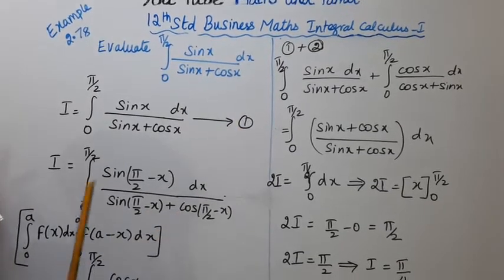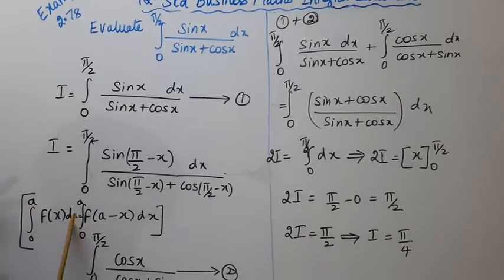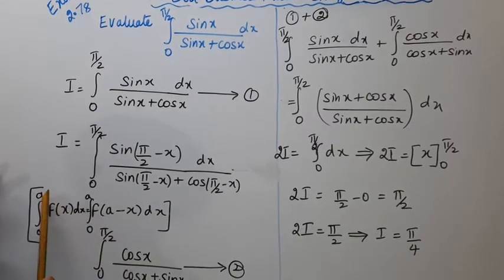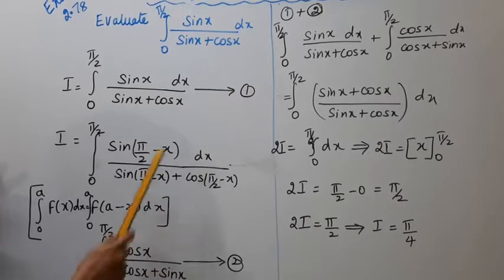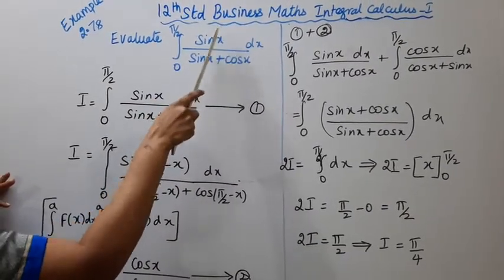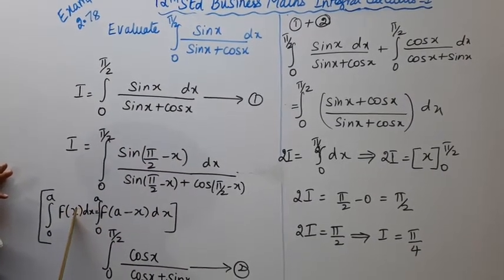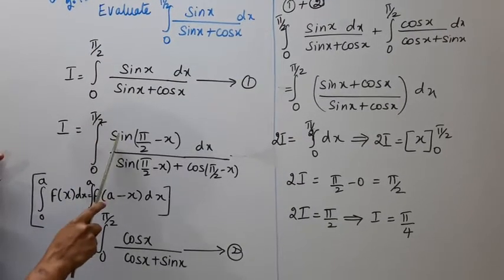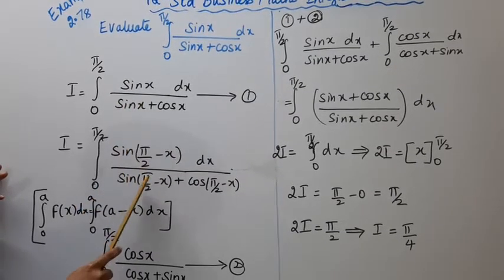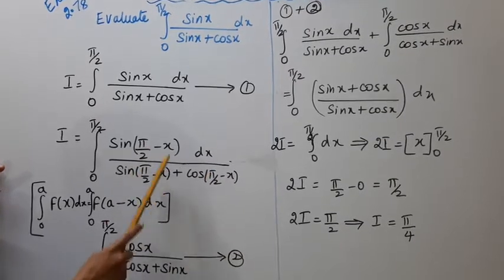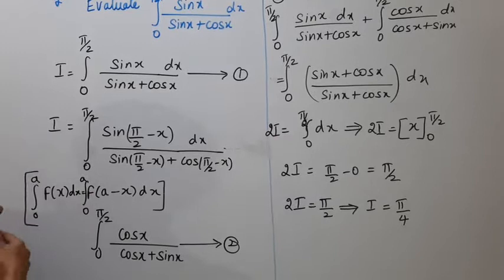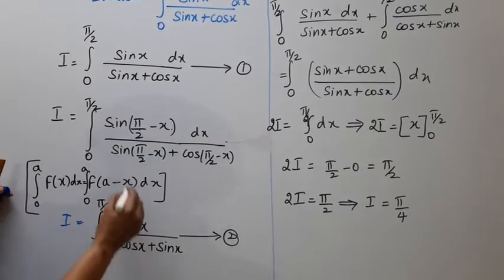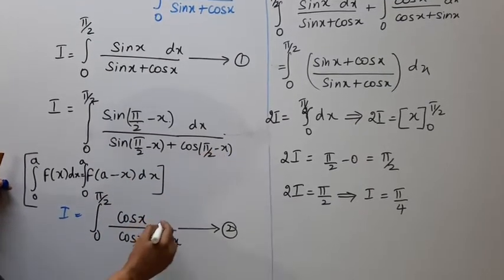We have a property: integration 0 to a of f(x) dx equals integration 0 to a of f(a - x) dx. Applying this with a = π/2: sin(π/2 - x) becomes cos x, and cos(π/2 - x) becomes sin x. So this gives us integration 0 to π/2 of cos x divided by (cos x plus sin x) dx. This is equation 2.